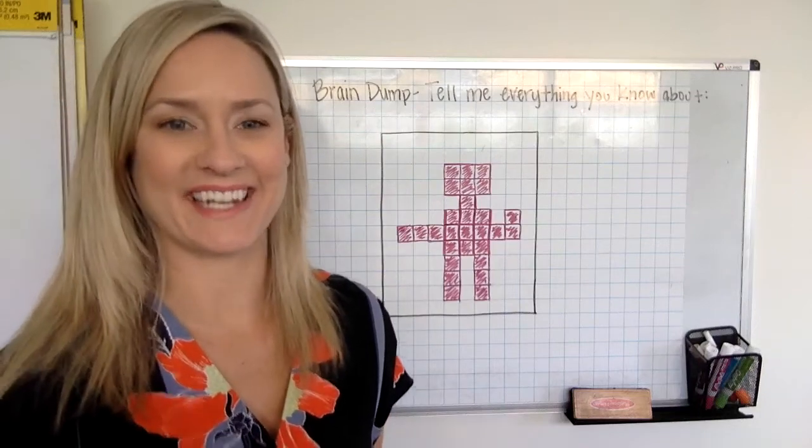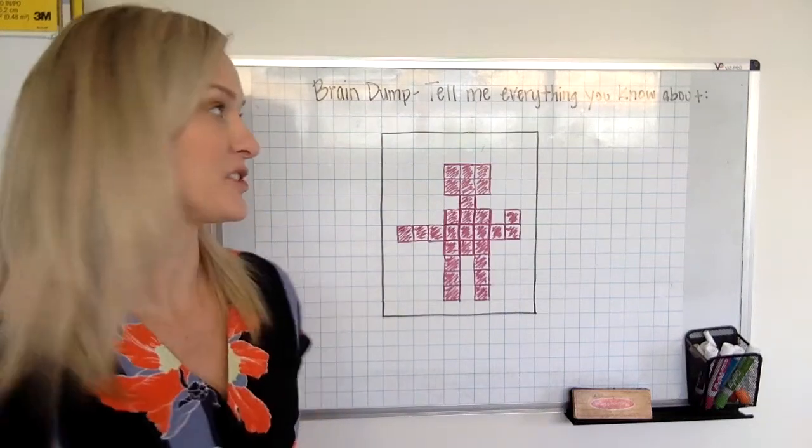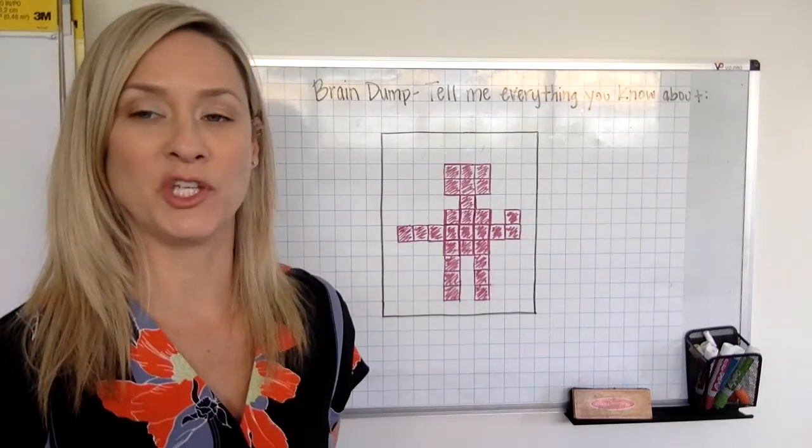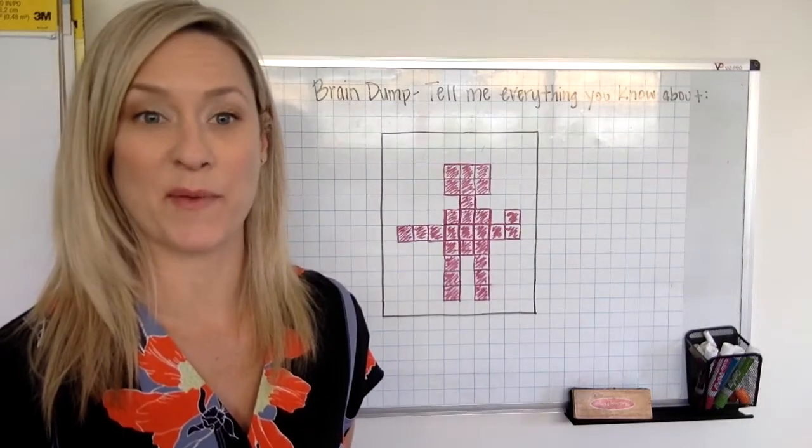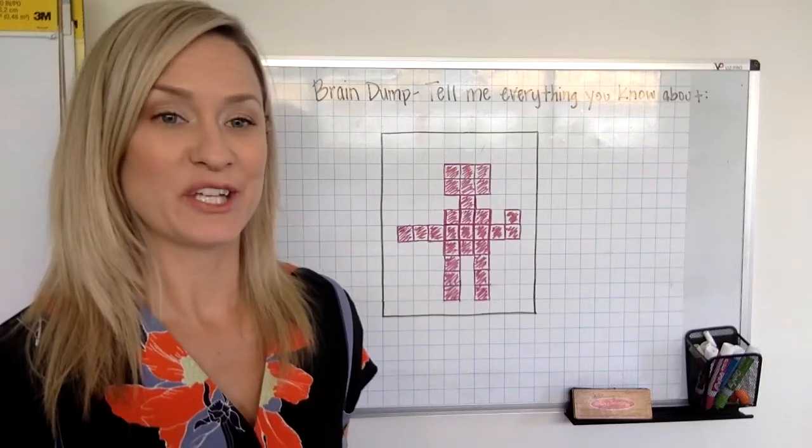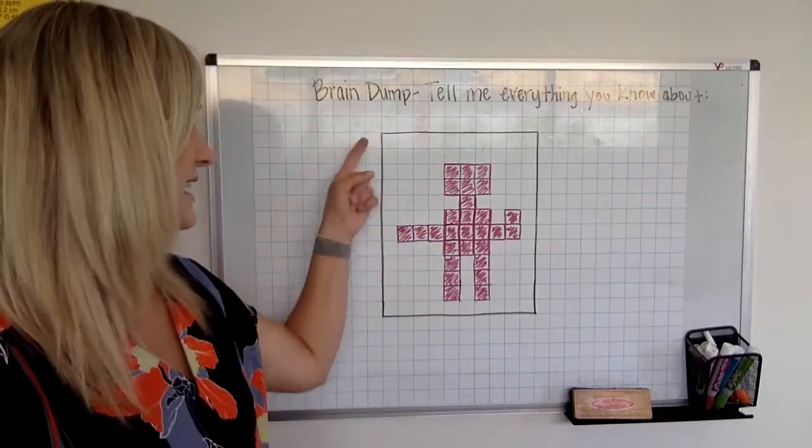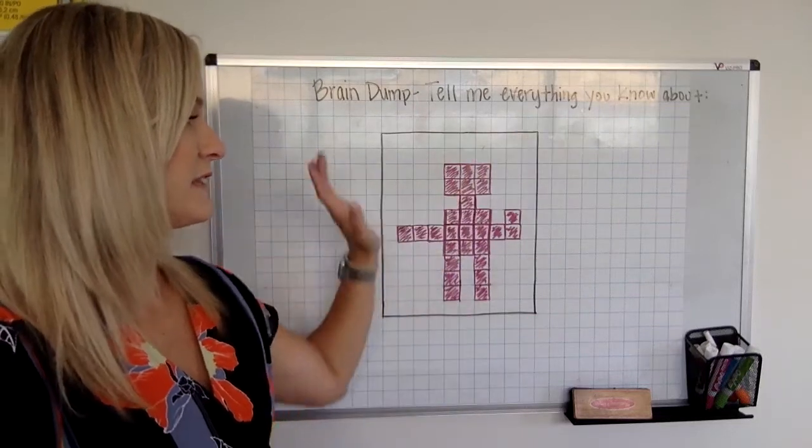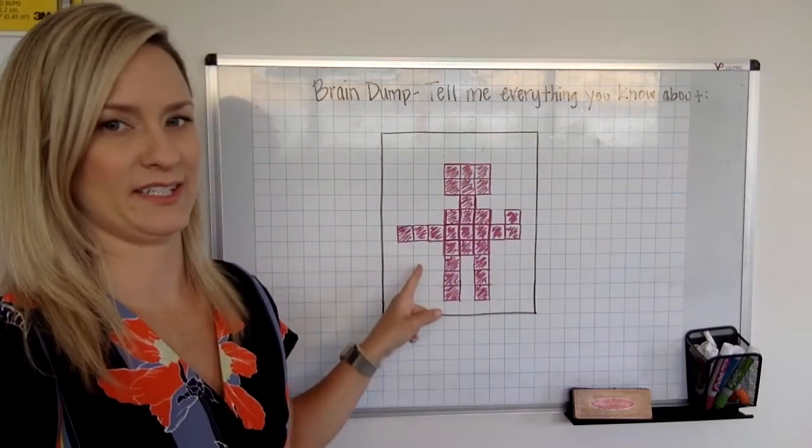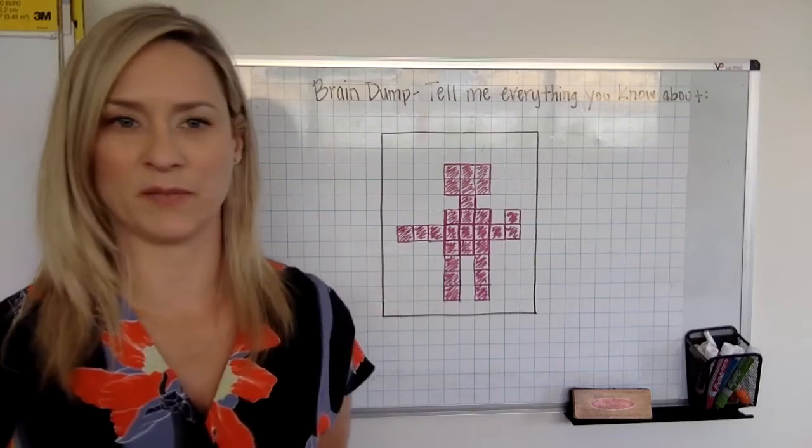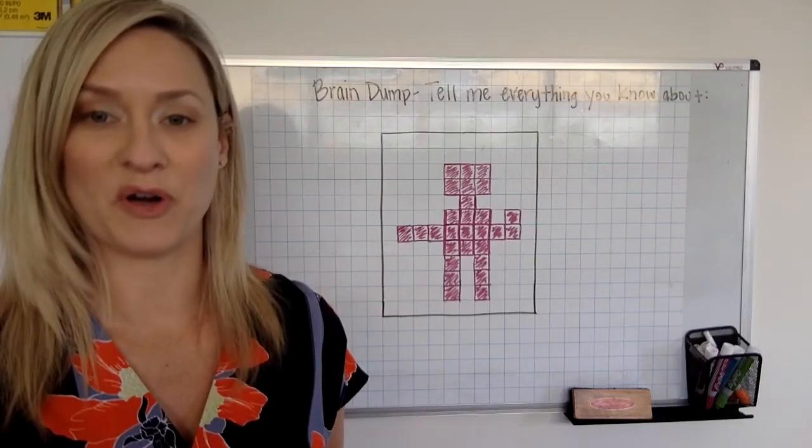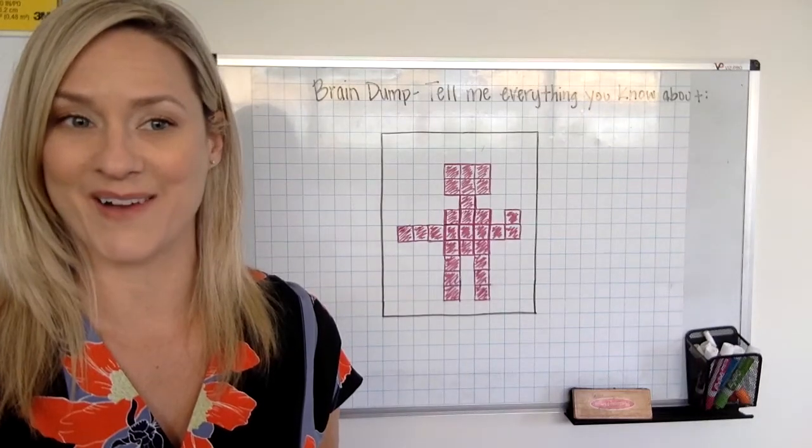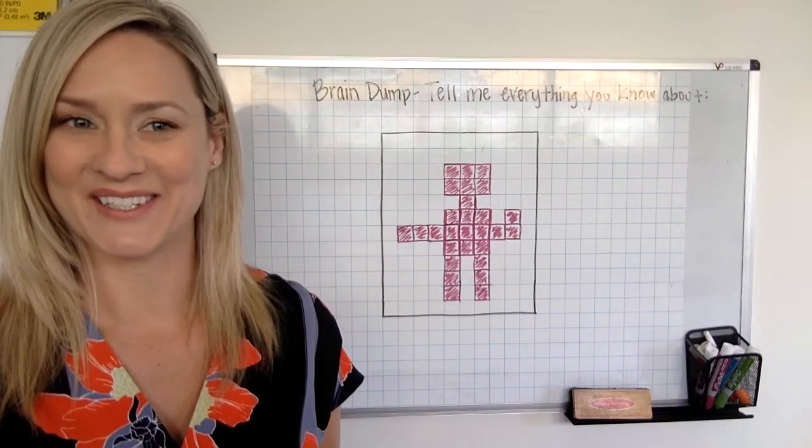Hey third graders, it's Mrs. Compton again and I'm here today to do a brain dump with you. When we do a brain dump, you tell me everything you know about a certain thing. So here's what I have today: I have this rectangle filled in, and I want you to take a moment and write down all the things that you've noticed about this. All right, ready, go.